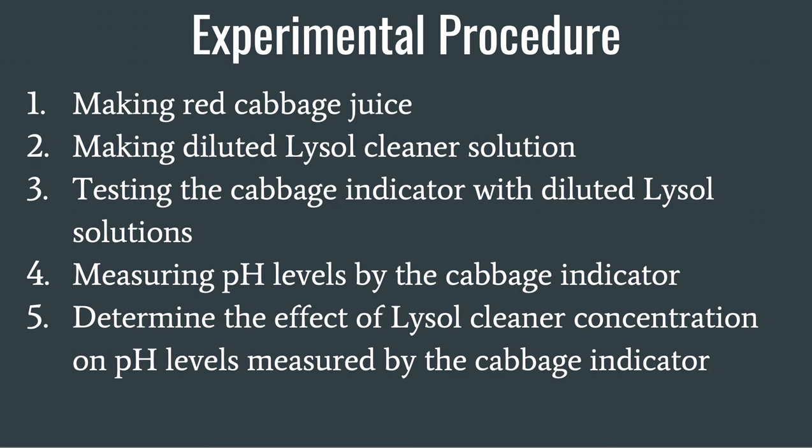Listed below are the steps for my experimental procedure. The first step is making the red cabbage juice. The second step is making the diluted Lysol Cleaner solution. The third step is testing the cabbage indicator with the diluted Lysol solution. The fourth step is measuring pH levels by the cabbage indicator. The fifth step is determining the effect of the Lysol Cleaner concentration on pH levels measured by the cabbage indicator.